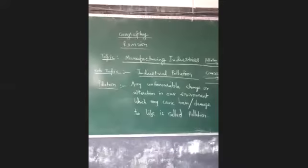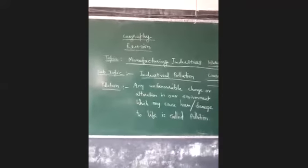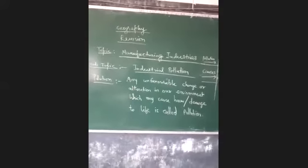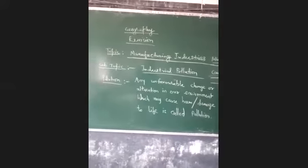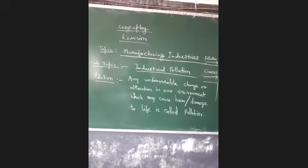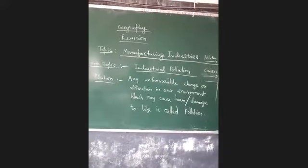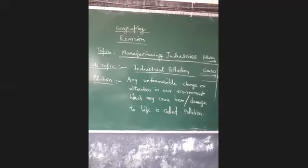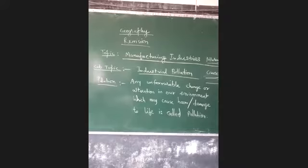For example, we cannot tolerate heat, we cannot tolerate cold, and even we cannot tolerate higher concentration of oxygen and carbon dioxide. If our composition of atmosphere changes then also we can suffocate. If there is intense heat waves, if there is intense cold wave, then also it is not suitable for our life and it may threaten it, so it is known as pollution.